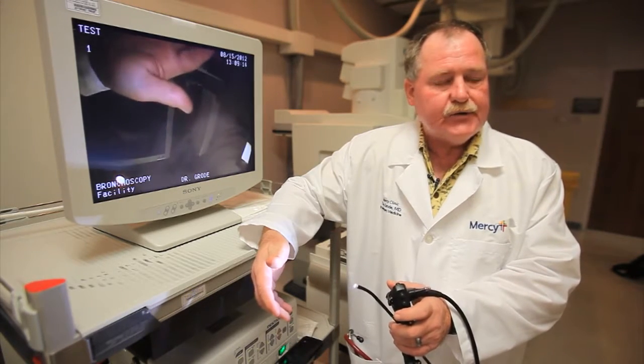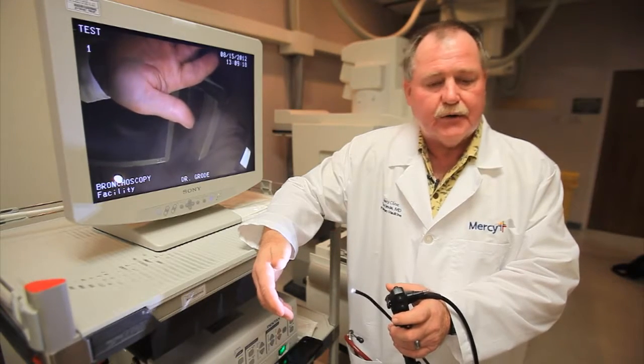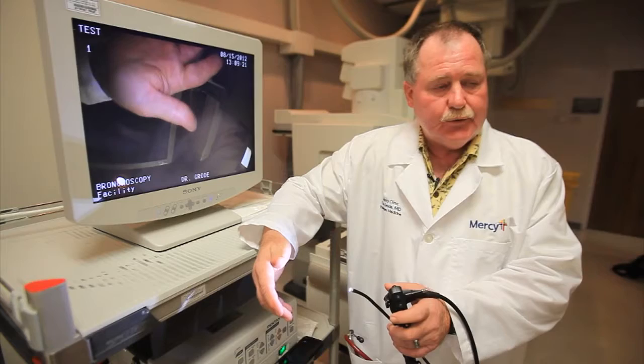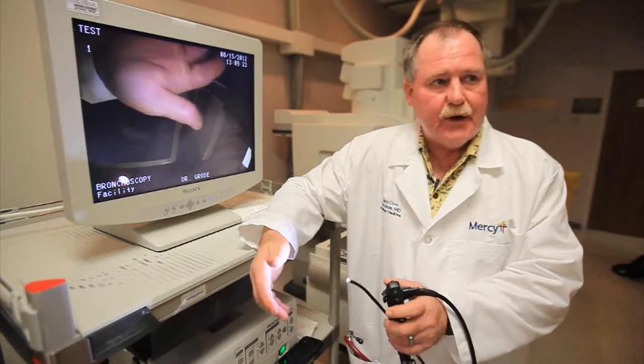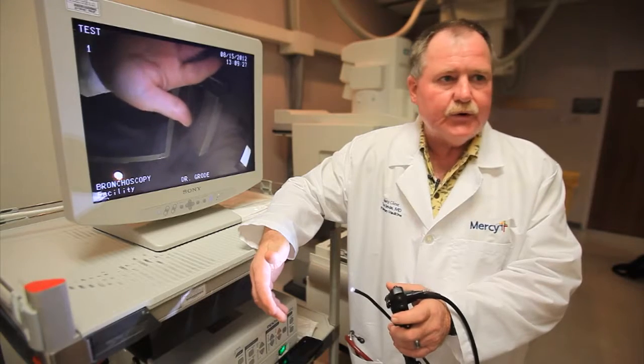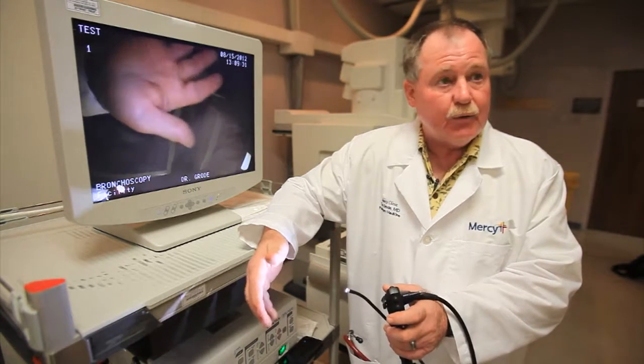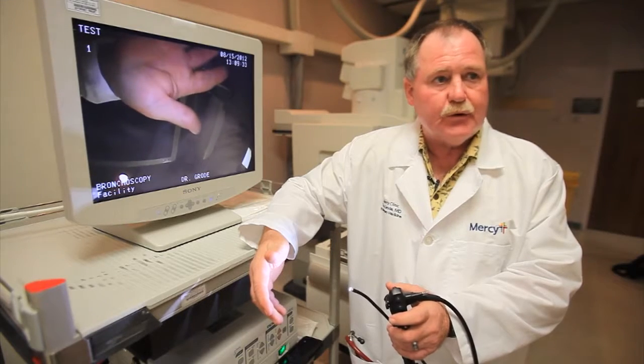We go down and examine the upper airway first, the vocal cords and the area alongside, and then pass through the vocal cords into the main airways. We can see about one-third of the major airways distance-wise, and then the airways become too small for the scope to go any further.